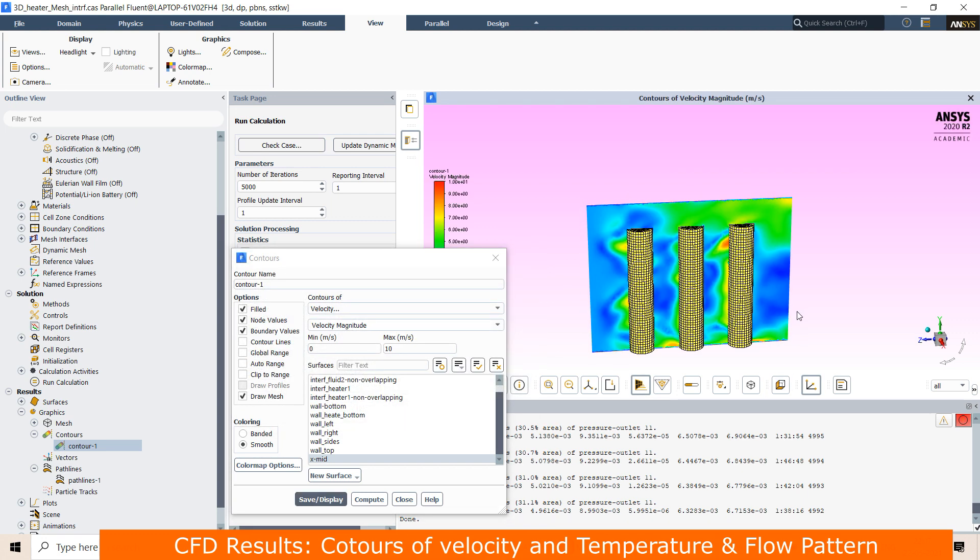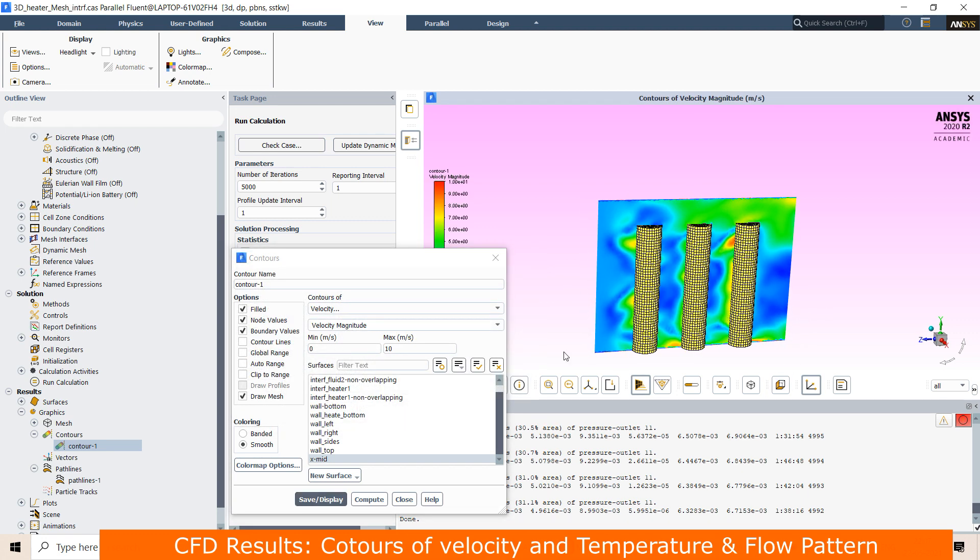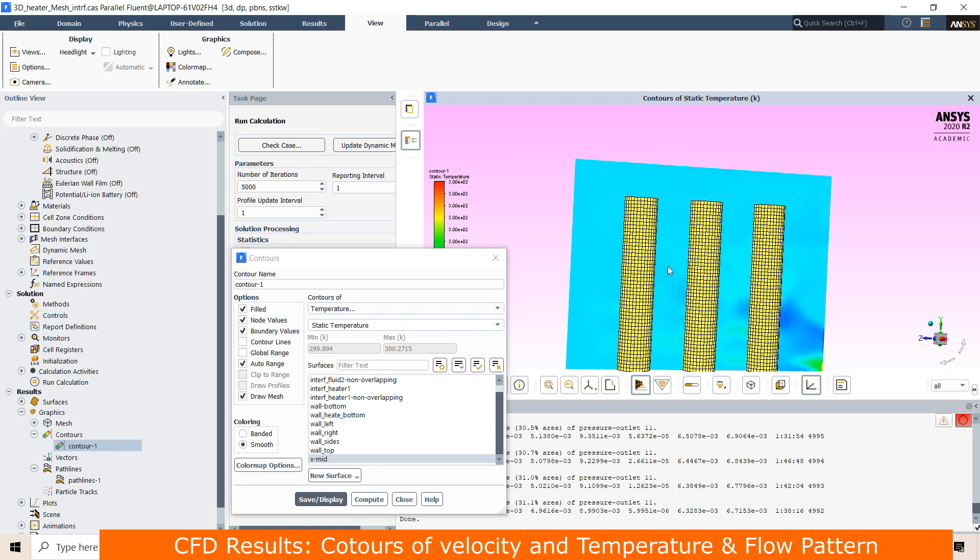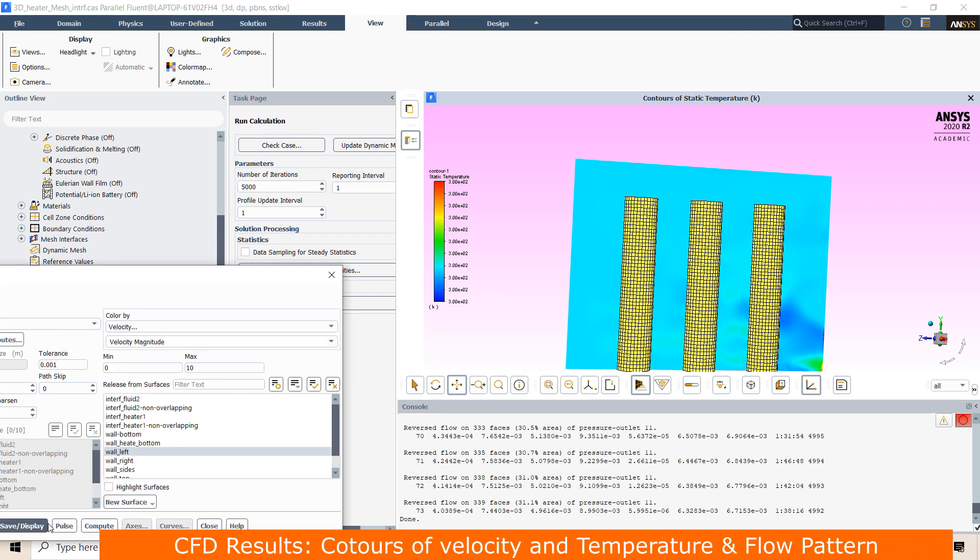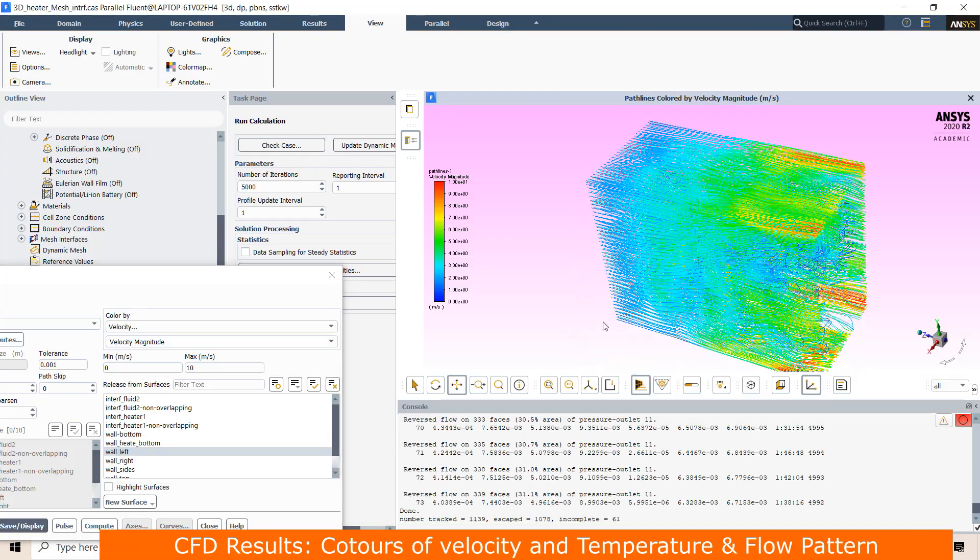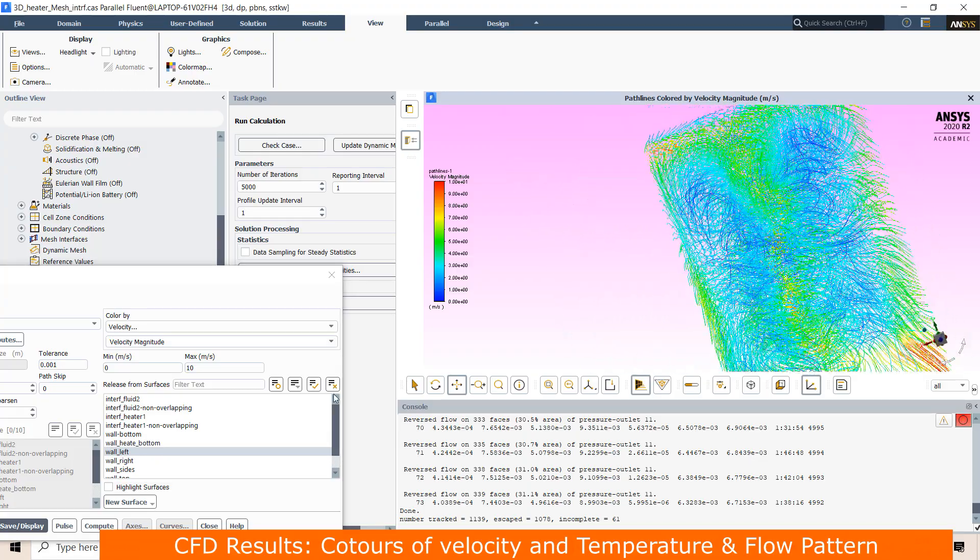That means fluid is moving over this medium. Then you can also display the temperature. This is the temperature distribution. You can also present streamlines.